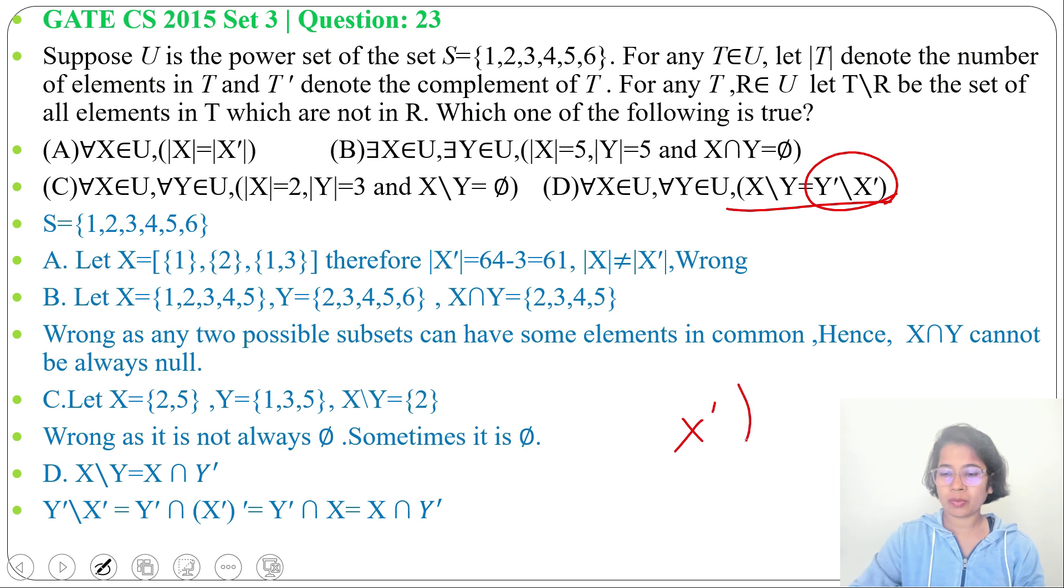X' whole complement will be simply X. So, Y'∩X. Intersection is commutative, so we can write X∩Y'. Now, both are same, both are X∩Y'. So, we can say X\Y is equivalent to Y'\X'. Both are equivalent. Hence, answer will be option D.